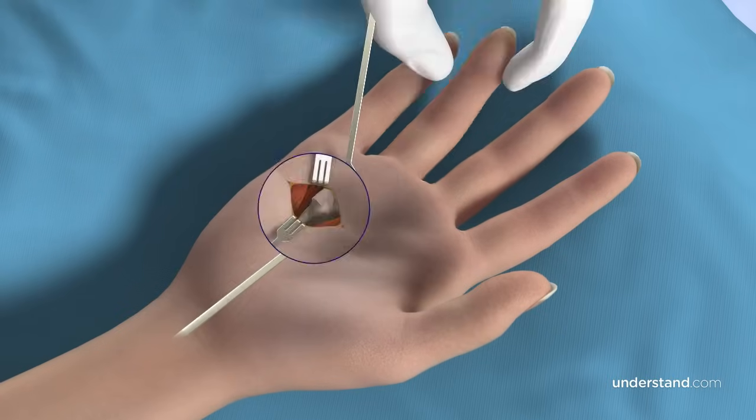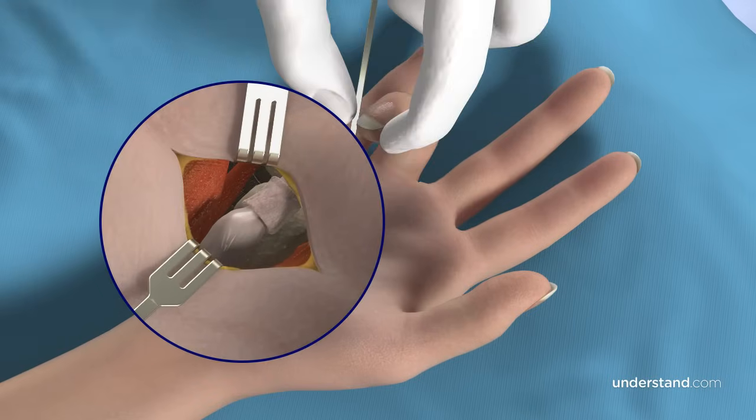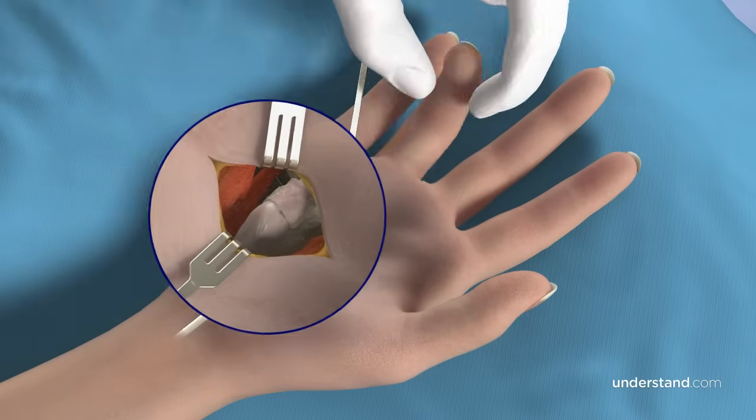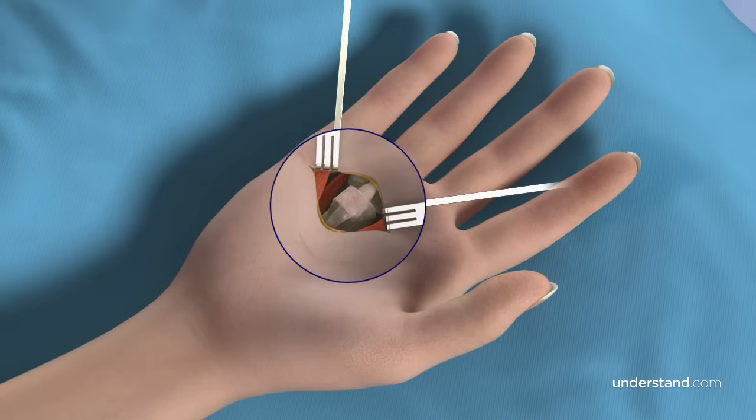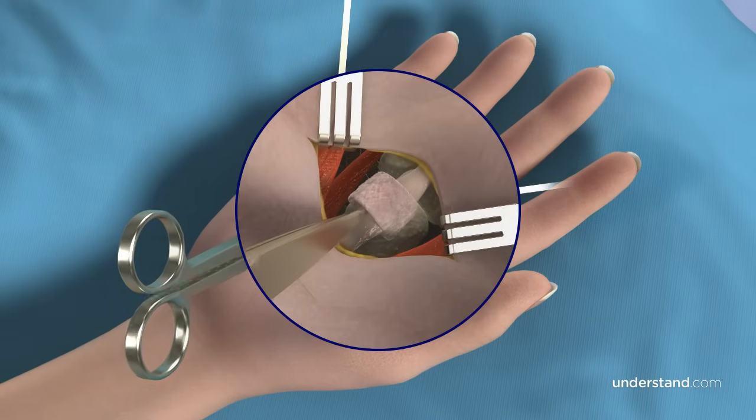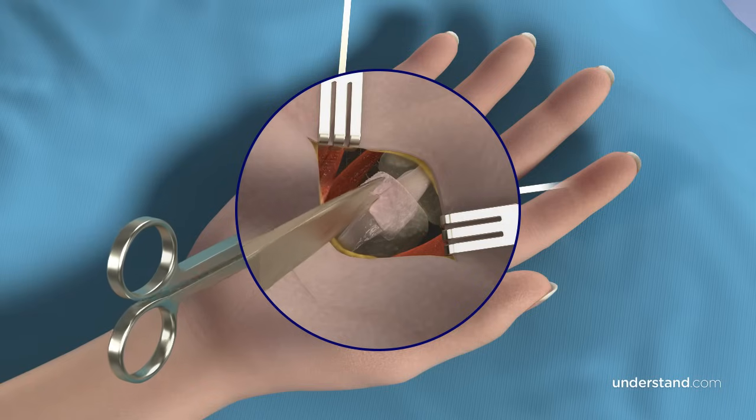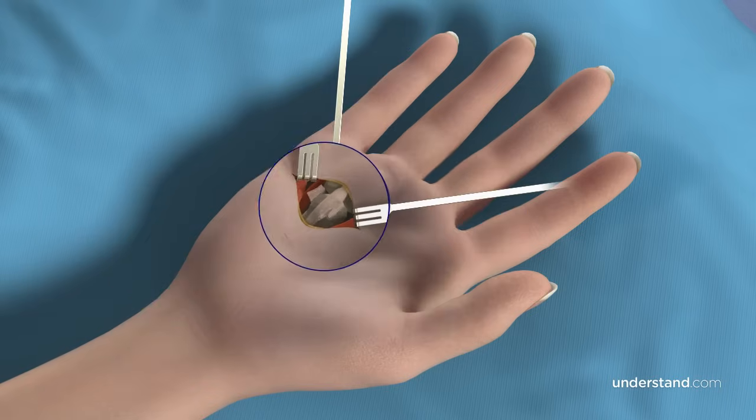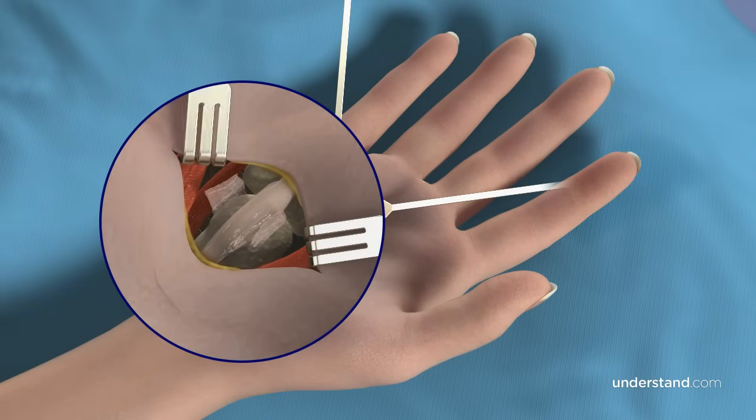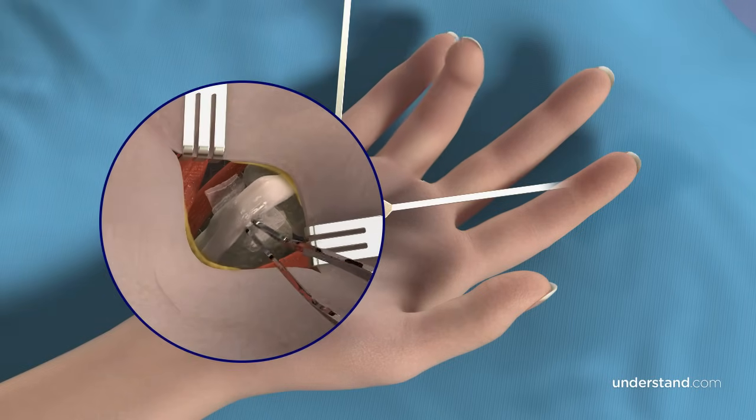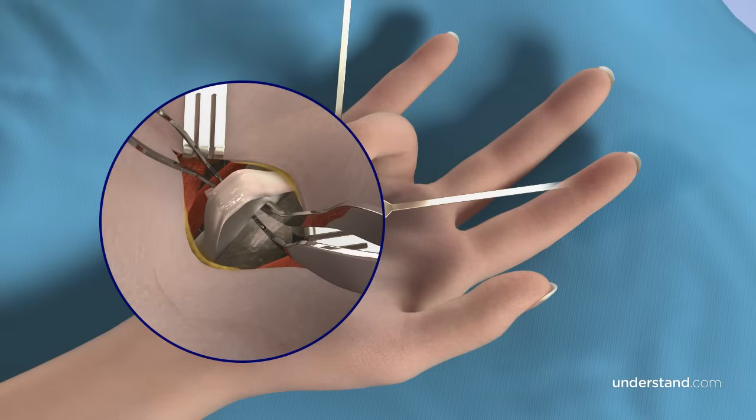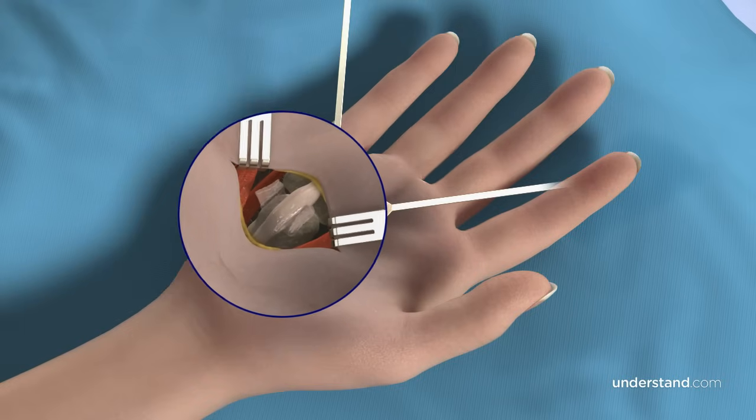The finger is flexed and extended to visualize the inflammation or nodule as it catches on the A1 pulley. The tissues are retracted away from the A1 pulley, and it is carefully released by cutting it with either scissors or a knife. Once the pulley is opened, the surgeon will typically use an instrument to inspect the two flexor tendons by pulling them upwards out of the incision to confirm full finger flexion with no catching or locking.